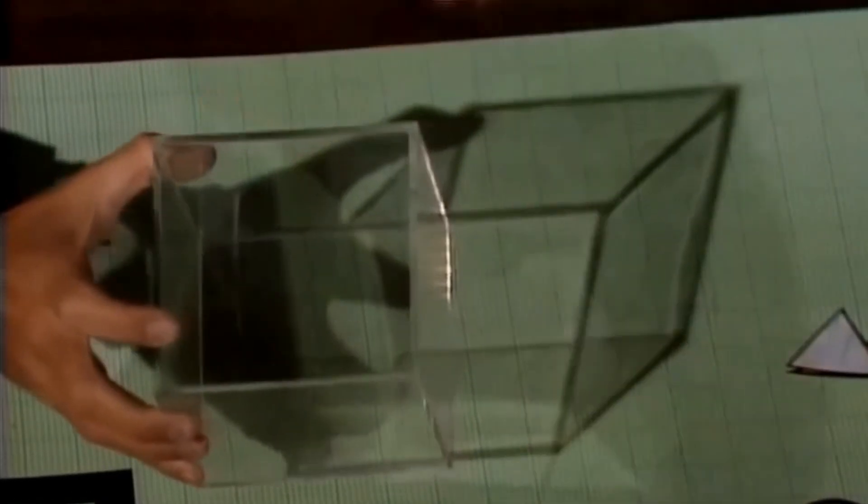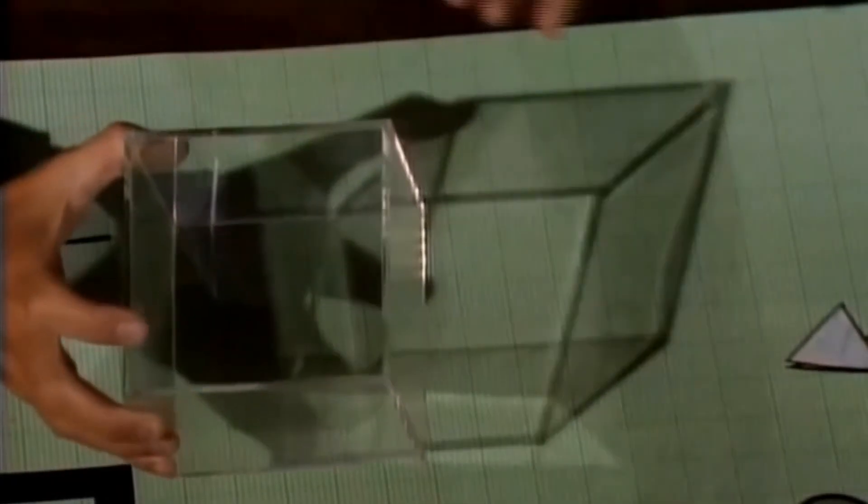Now, let's take this three-dimensional cube and project it, carry it, through a fourth physical dimension. Not that way, not that way, not that way, but at right angles to those three directions. I can't show you what direction that is, but imagine that there is a fourth physical dimension. In that case, we would generate a four-dimensional hypercube, which is also called a tesseract. I cannot show you a tesseract, because I and you are trapped in three dimensions.